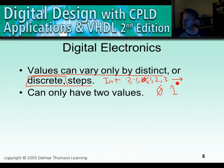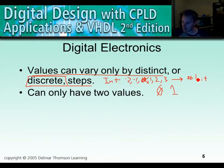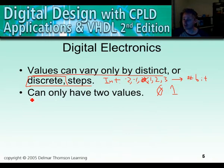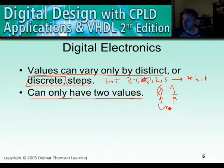How high the integer can go depends on the number of bits in the digital number or the analog-to-digital converter. At the most basic level, a digital value is represented by a bit, and a bit can have a value of either 0 or 1. This is the smallest unit element in a digital word or a digital number.